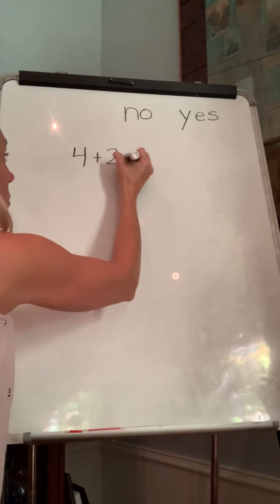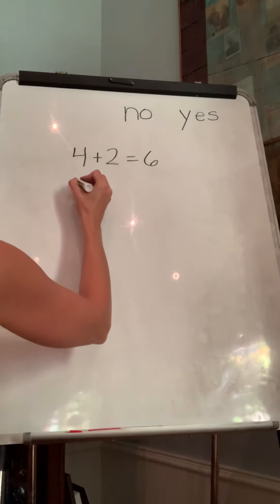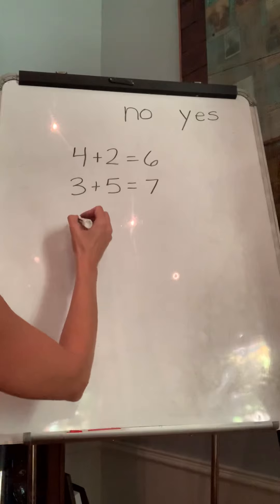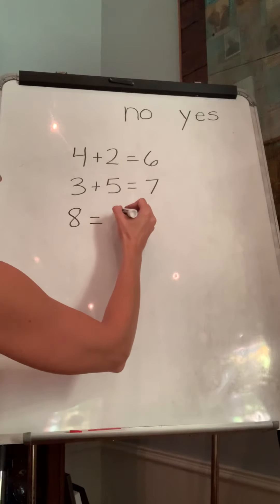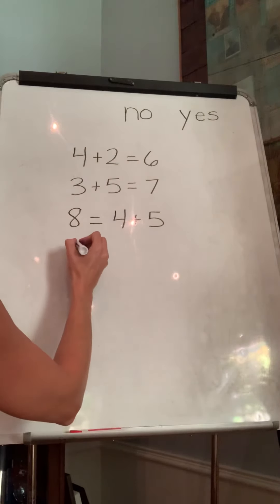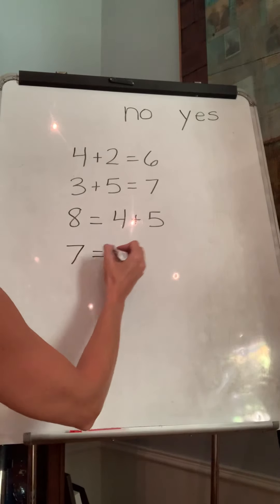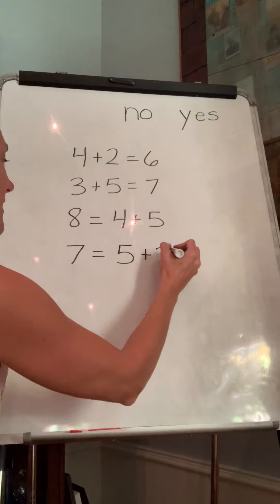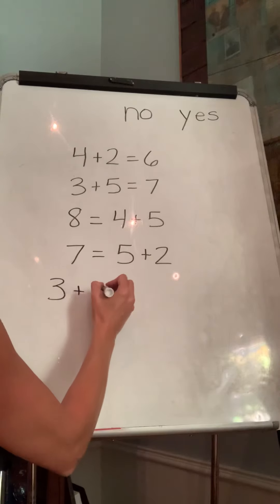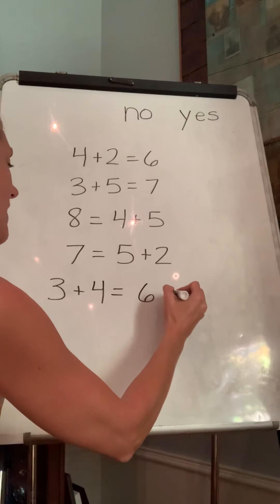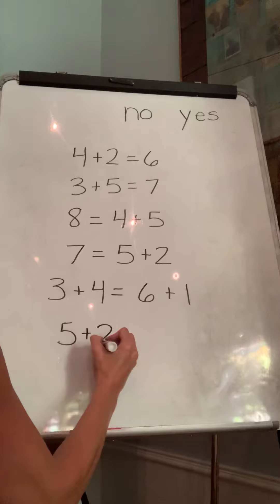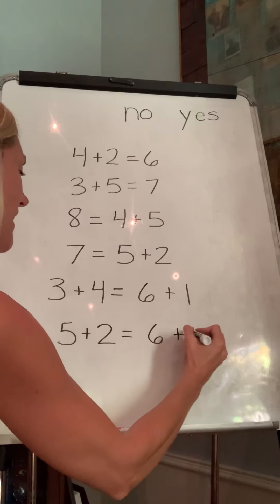Four plus two equals six. Three plus five equals seven. Eight equals four plus five. Seven equals five plus two. Three plus four equals six plus one. Five plus two equals six plus three.